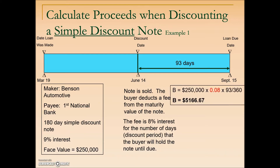To calculate the fee, note that whenever a note is sold prior to its maturity date, it will always be discounted regardless of how it originated. Even though this loan started as a simple discount note, we still use discounting procedures when it is sold. To find the bank discount, we take the maturity value times the interest rate times the remaining time — 93 days over 360 — amounting to a little less than $5,200.